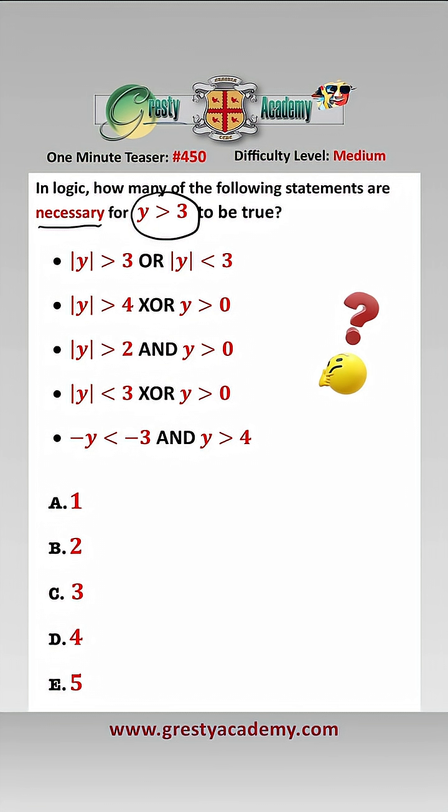So let's look at each one of these in turn. So if y is greater than 3, then we know that the modulus of y must be greater than 3, and as this is an OR statement, regardless of this bit, this will all be true, so therefore it is necessary.